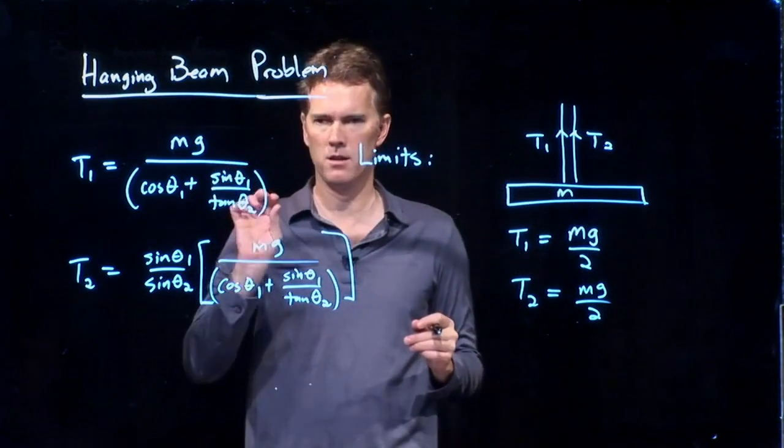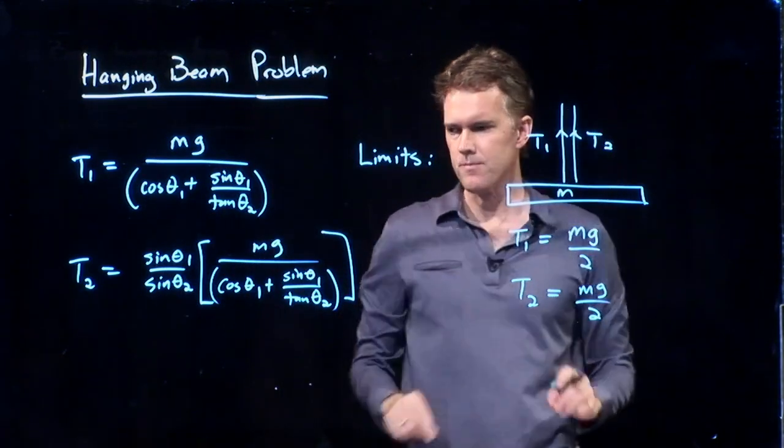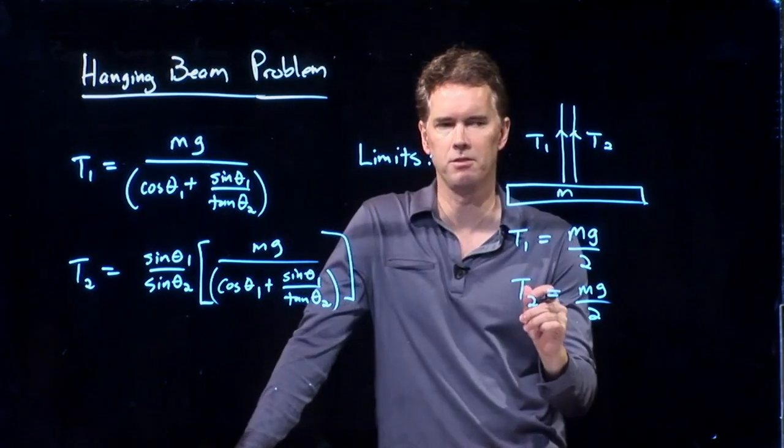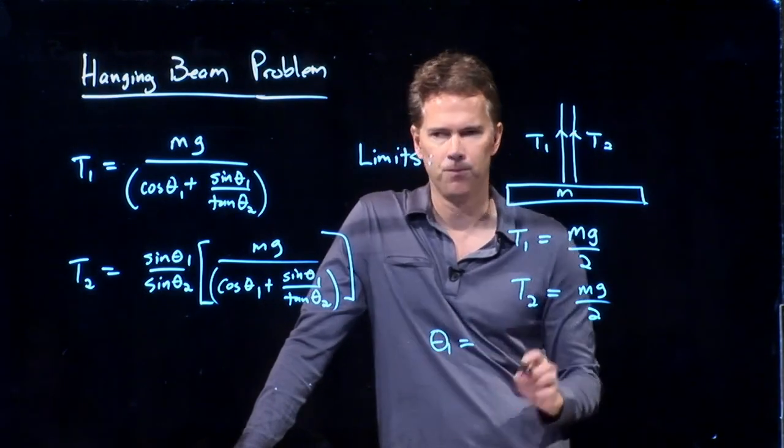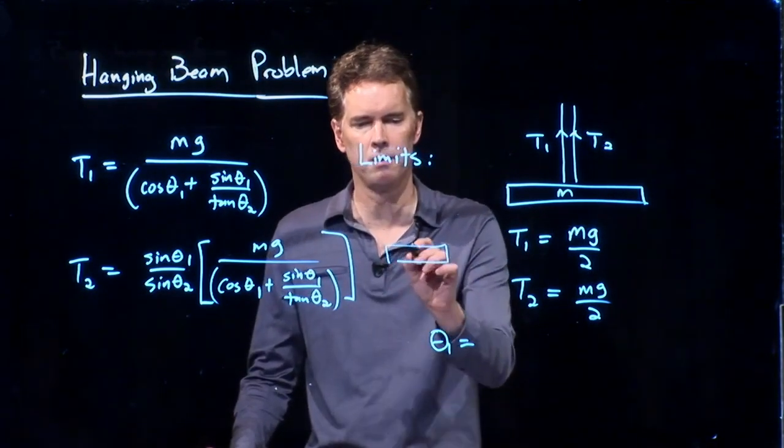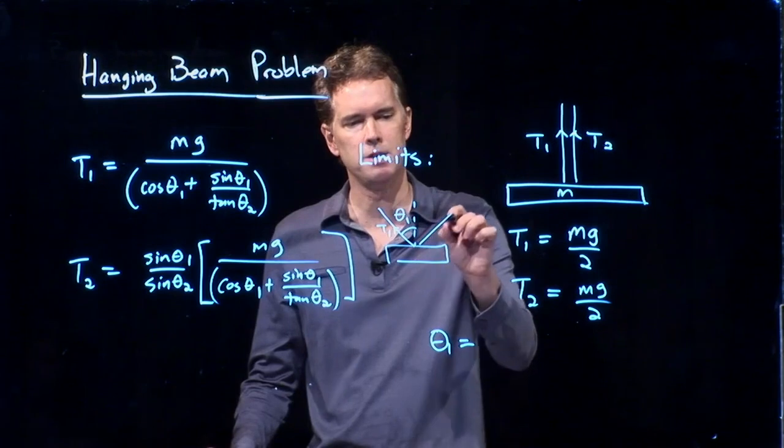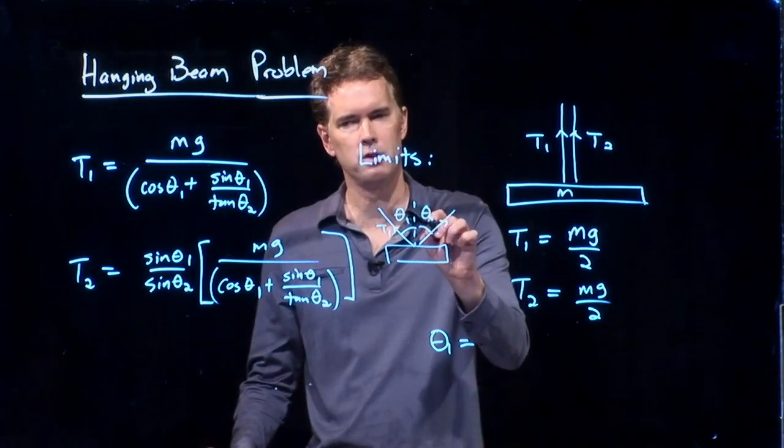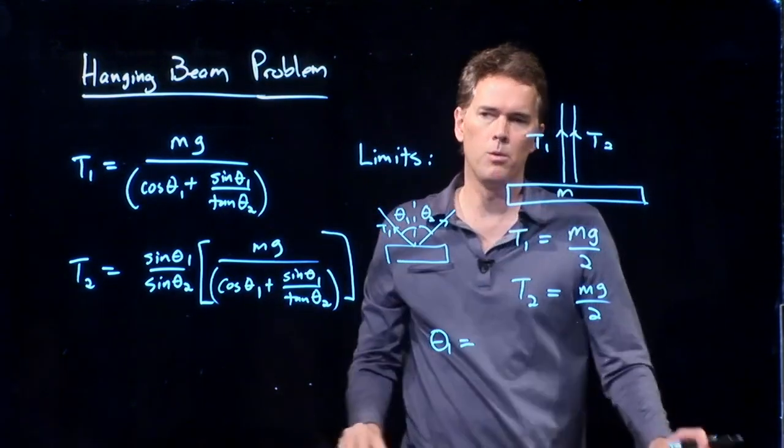How does that fit in to this? Right? Remember, this was general for these things at angles, and now we're looking at specific cases. So what would theta1 be equal to in this case? Remember, our original drawing looked like this. T1 was going up at theta1. T2 was going up at theta2. So, Andrew, let me ask you again. In this case, what would theta1 be equal to? Zero degrees. Zero degrees. What's theta2 equal to? Zero degrees. Zero degrees.